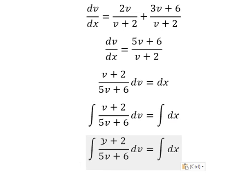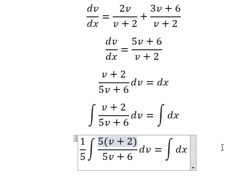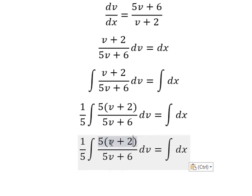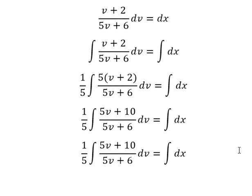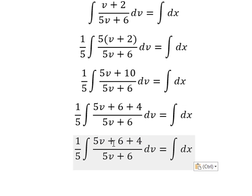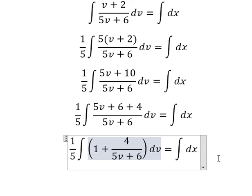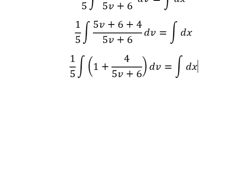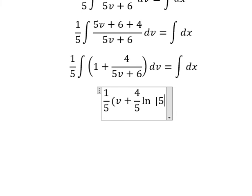We multiply by number five on the numerator and the denominator. This gives 5V plus 10, and number 10 we can put into 6 plus 4. This one divided by this one gives number one. Now we have the integration of number one, which gives V, and the integration of this one gives 4 over 5 times LN of the absolute value of 5V plus 6.